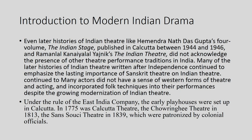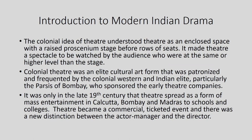Many actors did not have a sense of western forms of theatre and incorporated folk techniques into their performances despite the growing modernization of Indian theatre. Under the rule of the East India Company, the early playhouses were set up in Calcutta: the Calcutta theatre in 1775, the Chowringhee Theatre in 1813, the Sans Souci theatre in 1839, which were patronized by colonial officials. It was only in the late 19th century that theatre spread as a form of mass entertainment in Calcutta, Bombay, and Madras, reaching schools and colleges.